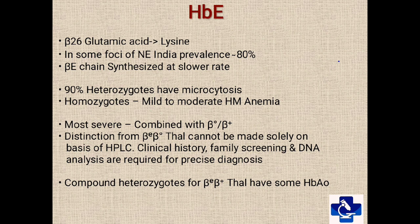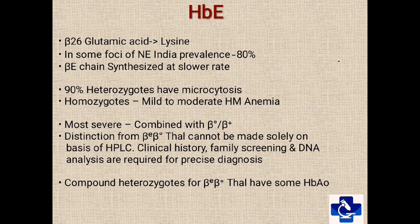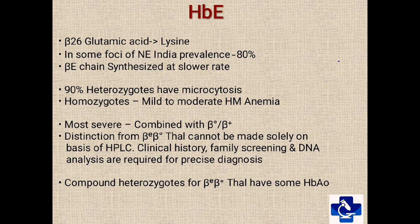The most severe clinical condition occurs when HbE is combined with beta-0 or beta-plus thalassemia. Distinction from beta-0 thalassemia heterozygous cannot be made solely on the basis of HPLC. So clinical history, family screening, and DNA analysis are required for precise diagnosis. Compound heterozygous for beta-E and beta-plus thalassemia have some HbA0 and hence help in identification.